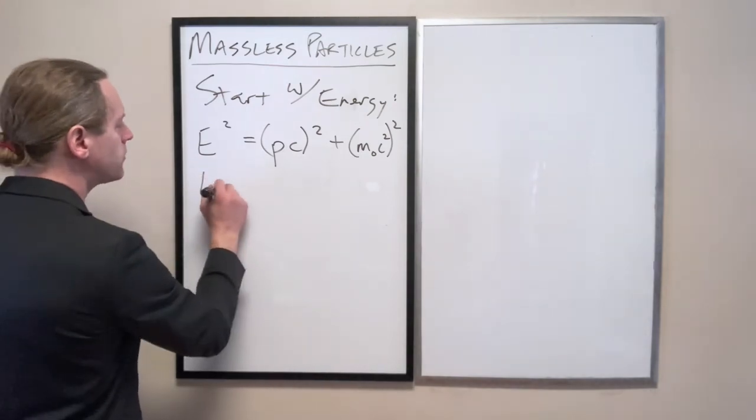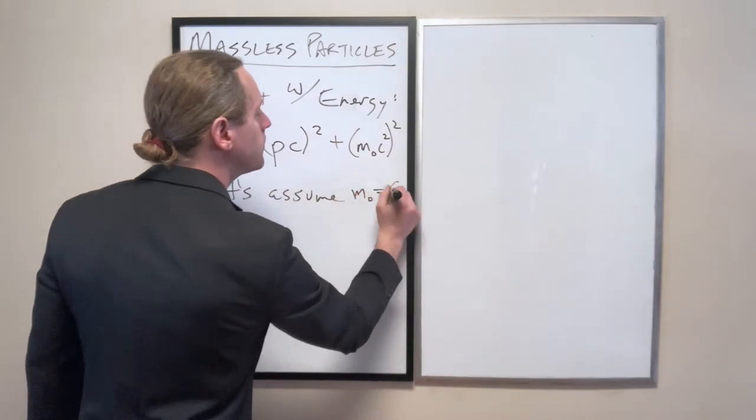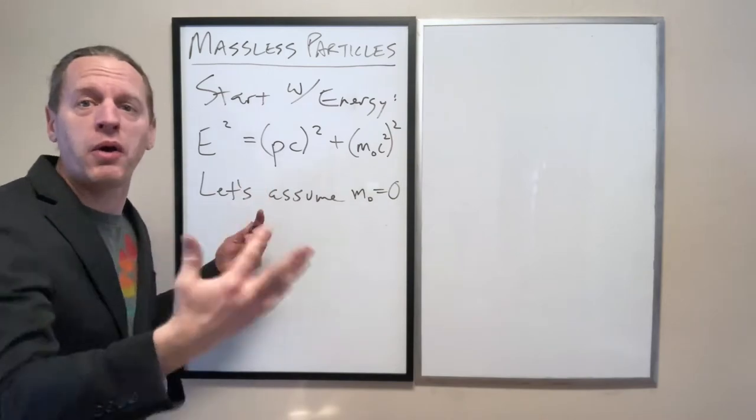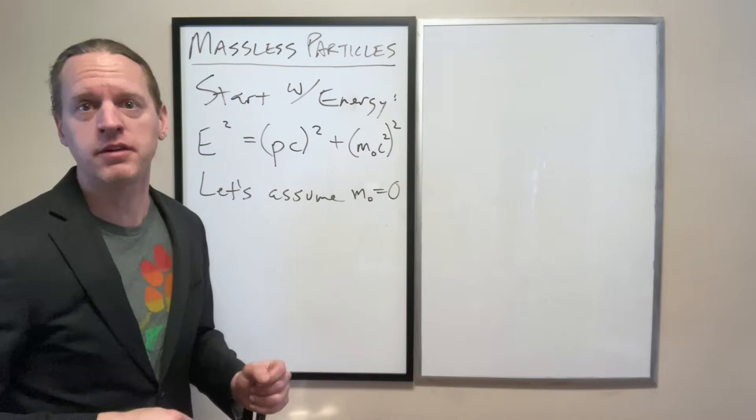Now, let's assume M or M-naught is zero. So, we're going to take a massless particle, a particle that somehow exists, but it doesn't have whatever that M characteristic or property associated with it is.